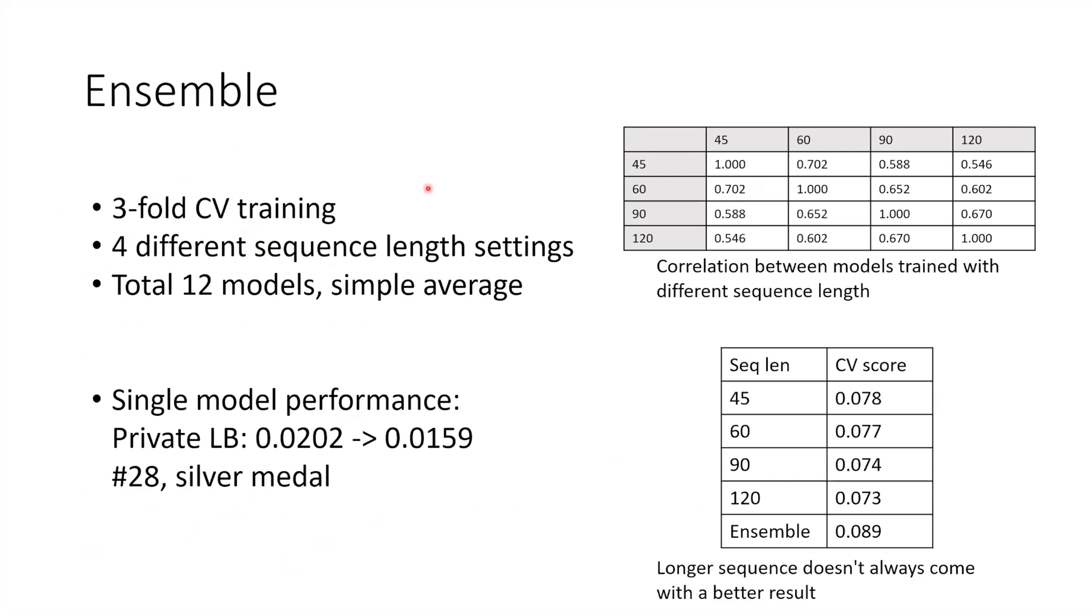The last part is ensemble. As you can see from the table on the right hand side, the correlation for models trained with different sequence lengths is surprisingly low. Most of them are below 70%. This indicates that ensemble will be very effective. For single model performance, a model with longer sequence length doesn't always come with a better result, but they are still very useful for ensemble because they have very low correlation with the models trained with shorter sequence length. The final ensemble model is just a simple average for 12 models trained with three-fold cross validation and four different sequence length settings.